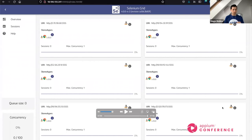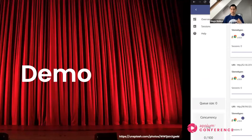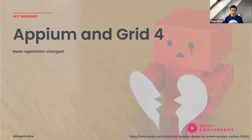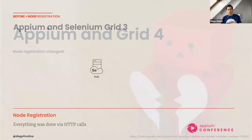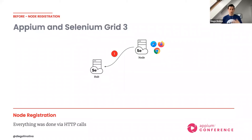That covers the grid demo. Let's jump back to the core of this presentation: what is going on with Appium and Grid 4? Basically, they don't work together — and you may have already seen why. The way a node gets registered changed. In Grid 3, registration was straightforward: a node sent an HTTP registration request with all its characteristics, the hub acknowledged it, and it was registered.